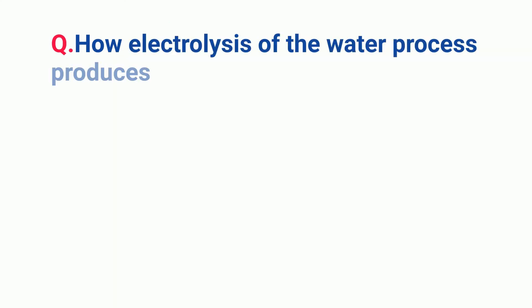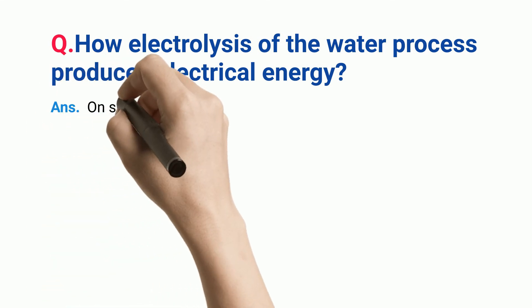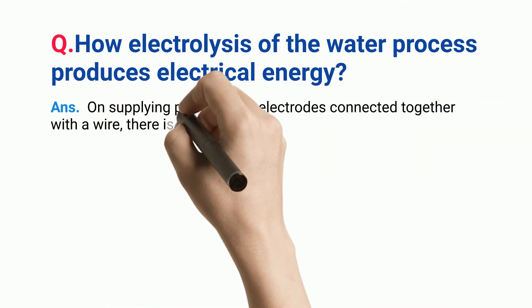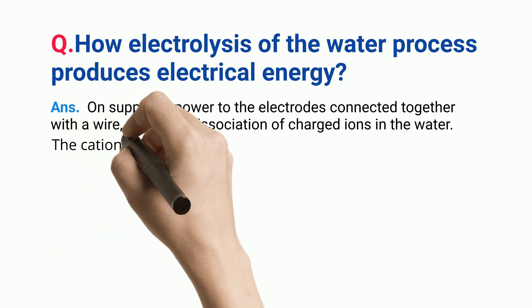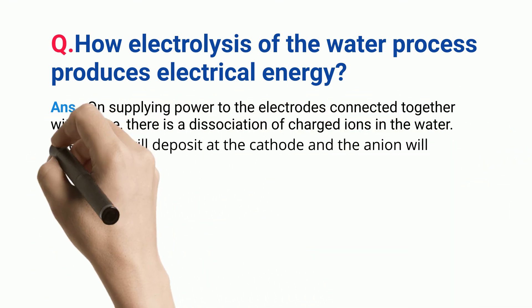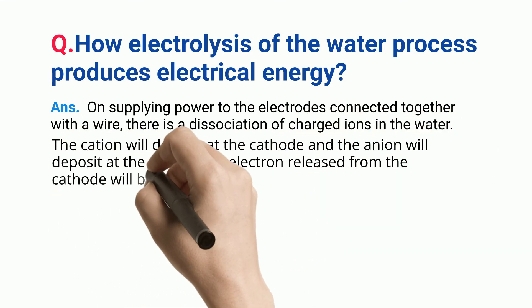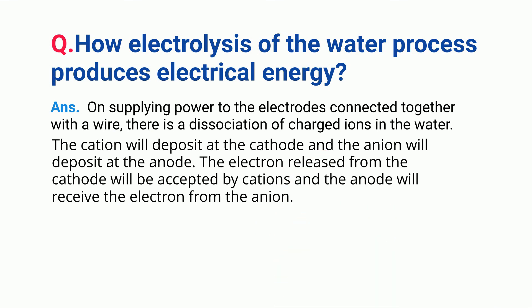How does the electrolysis of water produce electrical energy? On supplying power to the electrodes connected together with a wire, there is a dissociation of charged ions in the water. The cation will deposit at the cathode and the anion will deposit at the anode. The electron released from the cathode will be accepted by cations, and the anode will receive the electron from the anion.